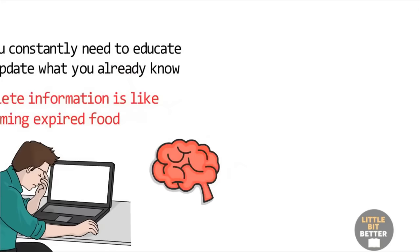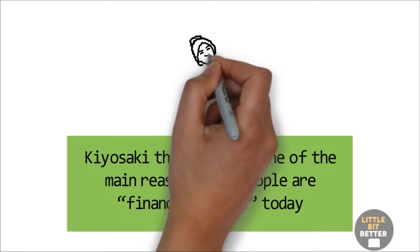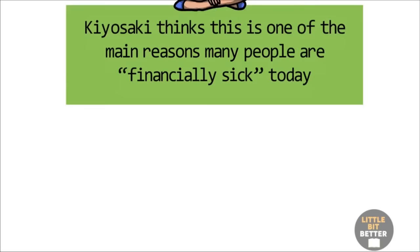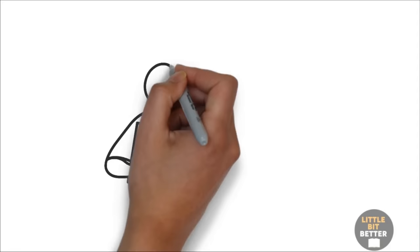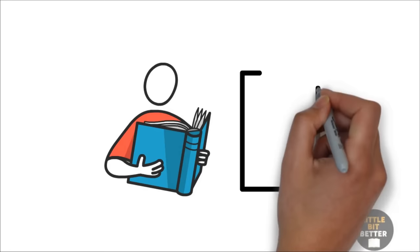Kiyosaki thinks this is one of the main reasons many people are financially sick today. The author does not provide any practical tips on how to improve IQ number five. To me, this chapter seemed like it was just random stories put together to create a chapter. Overall, I found the book quite useful, but as usual, the author repeats some information over and over, which can be quite annoying. That is why I tried to provide new information that is not repeated in his other books. If you would like to see more, check out the video you see on the screen. Thanks for watching.